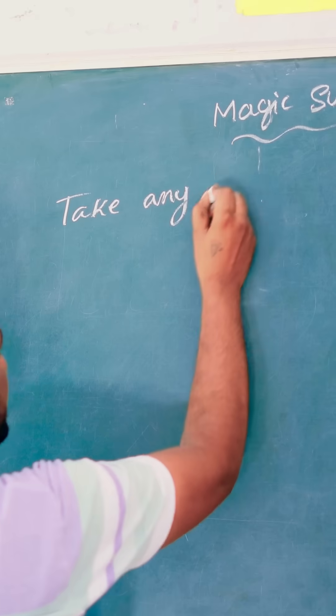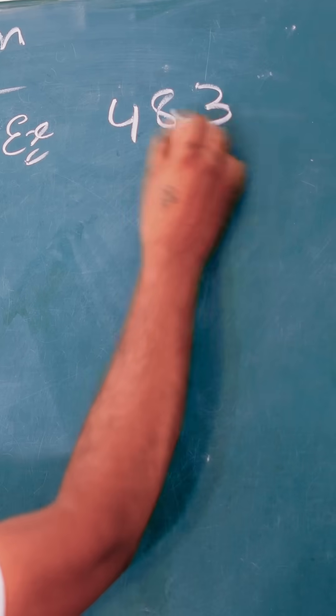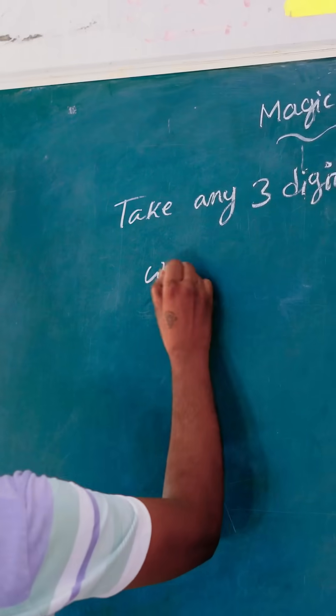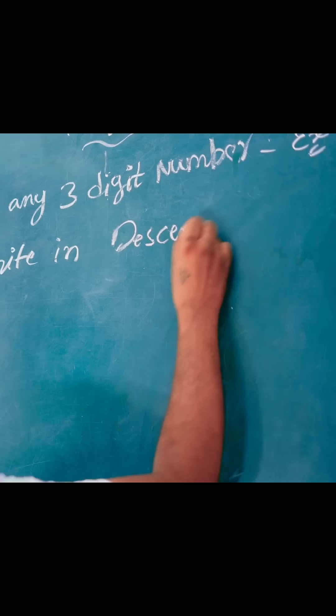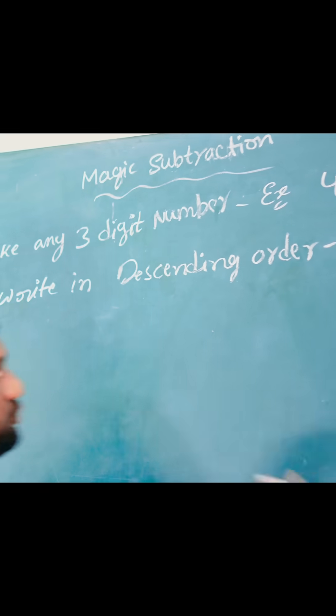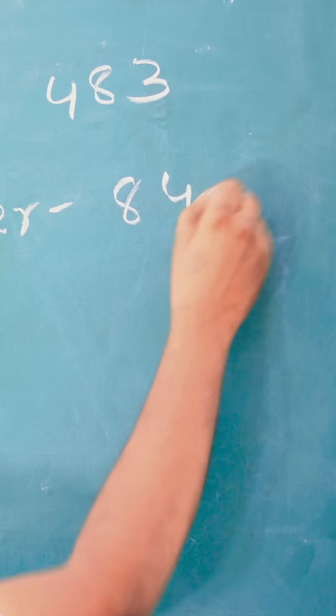Take any three digit number. For example, 483. Now write it in descending order — that means big to small. So 8, 4, 3.